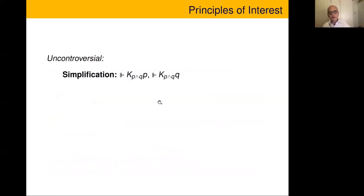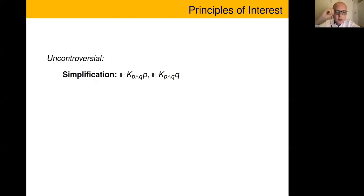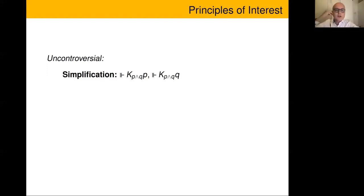Now I'll work through some candidate principles for a correct epistemic logic. The landscape is already complicated because we have three different interpretations. I'll start with a list of uncontroversial principles — principles that more or less any epistemic logic should satisfy, regardless of target. If you don't think your epistemic logic observes these simple principles, maybe you shouldn't be in the epistemic logic game at all.